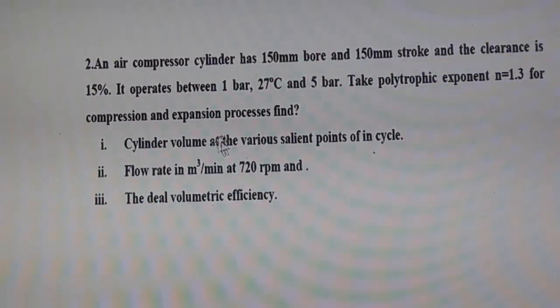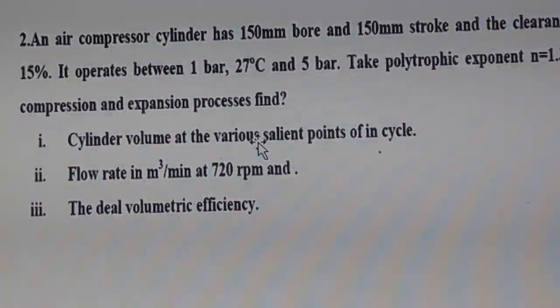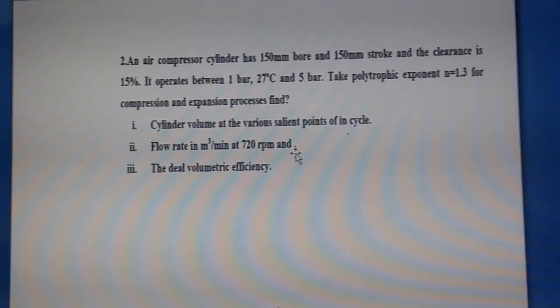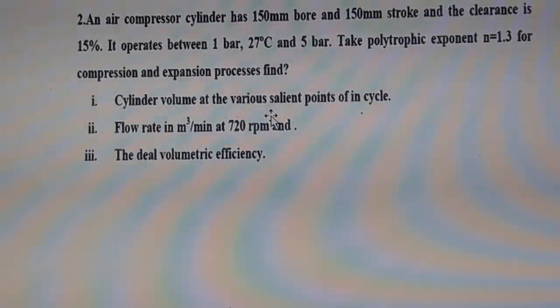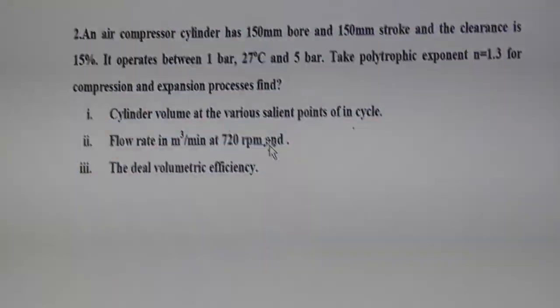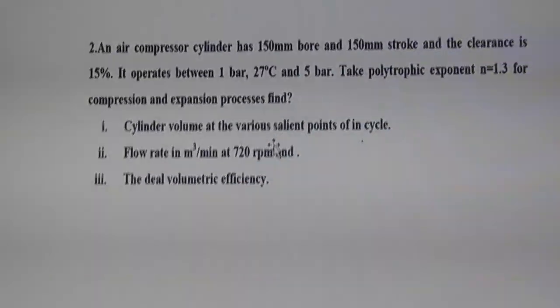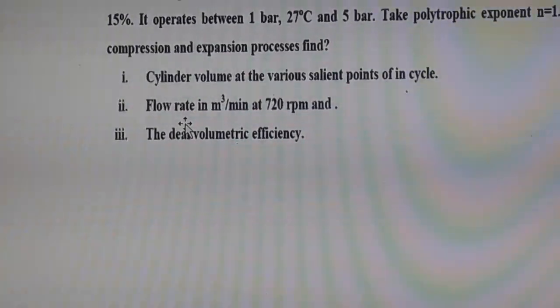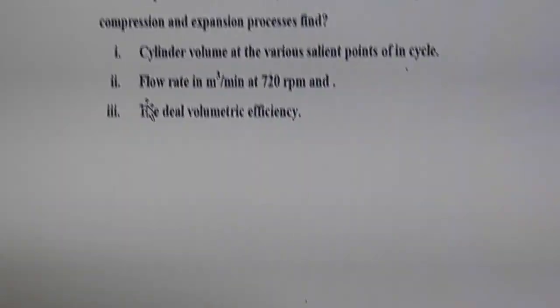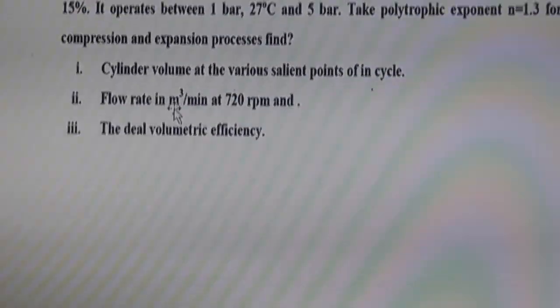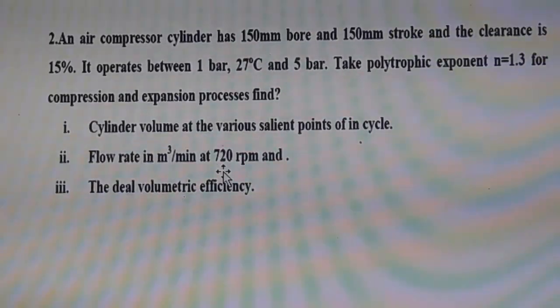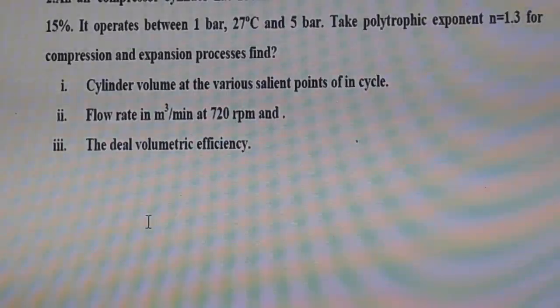We use the relation for volumetric efficiency in terms of clearance. The clearance factor C (or K) is the ratio of clearance volume to swept volume. Here clearance factor = 15% = 0.15. Diameter D = 150 mm, stroke L = 150 mm, p1 = 1 bar, T1 = 27°C, p2 = 5 bar, n = 1.3. We need to find volumes V1, V2, V3, V4, free air delivery (FAD), and volumetric efficiency.